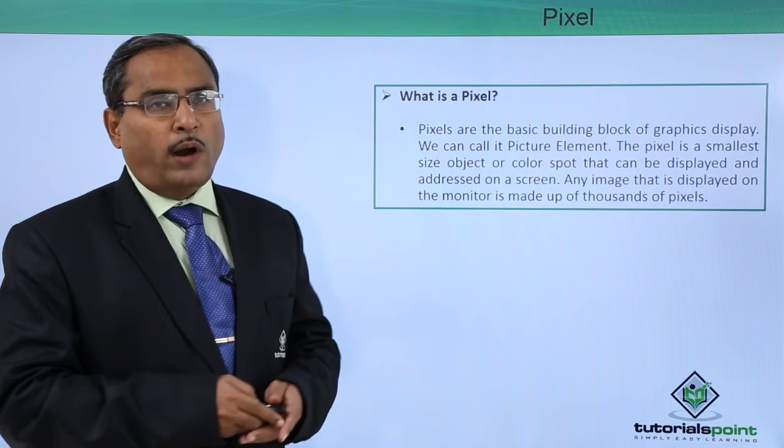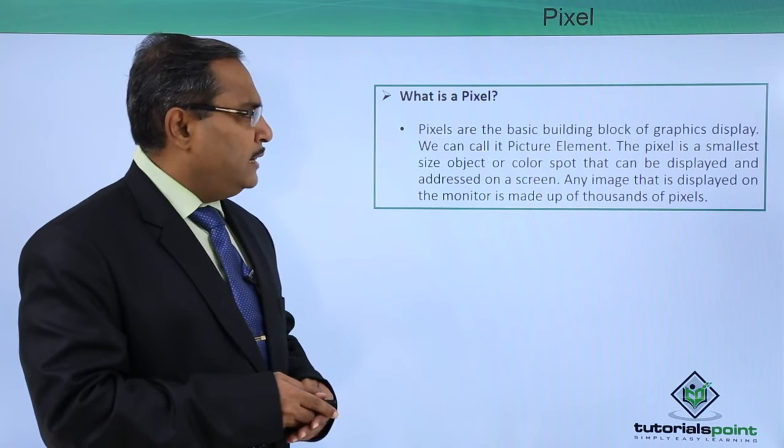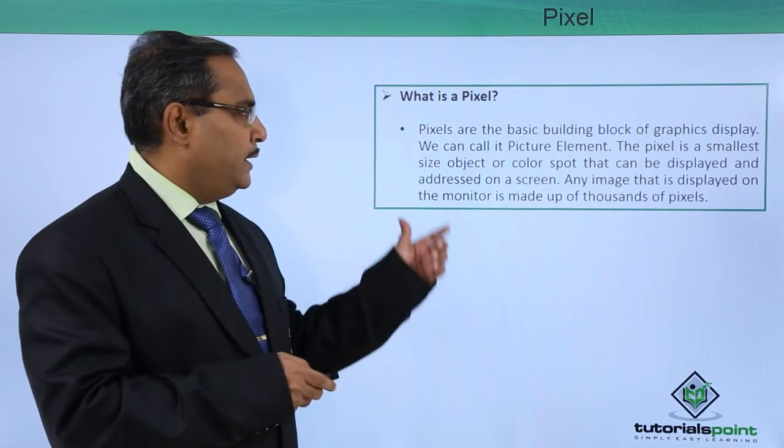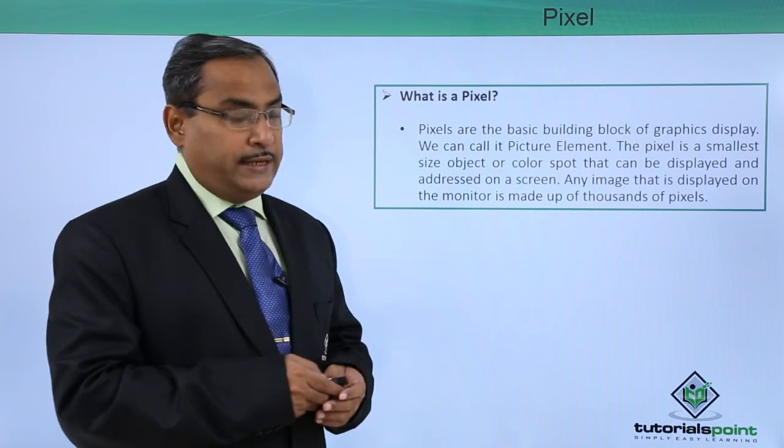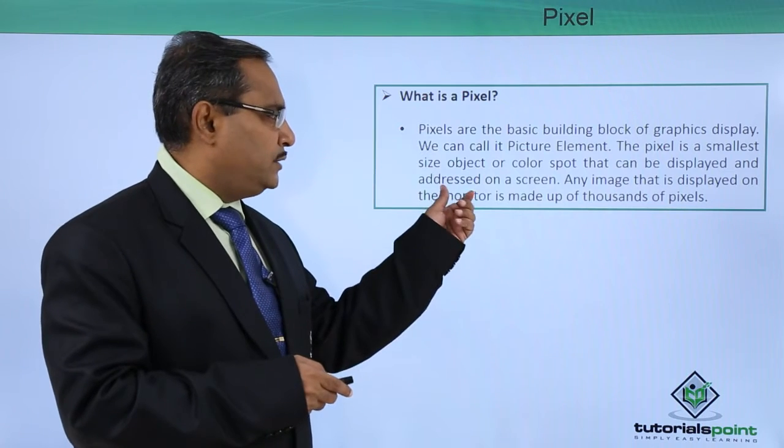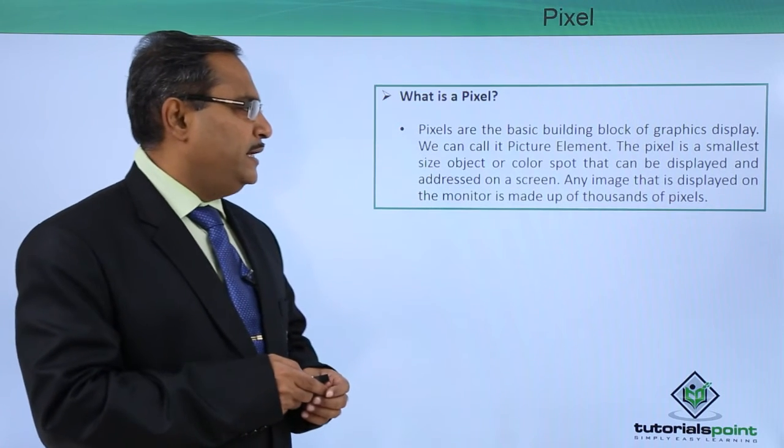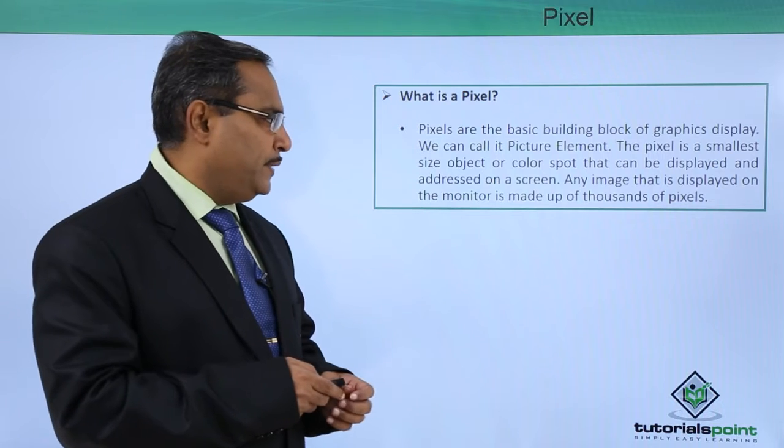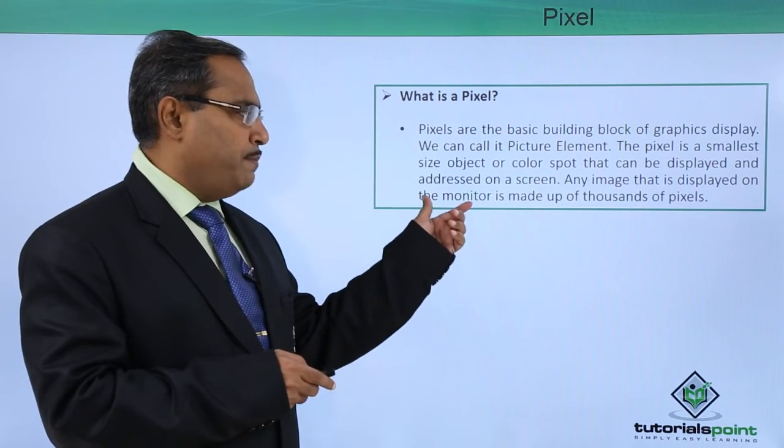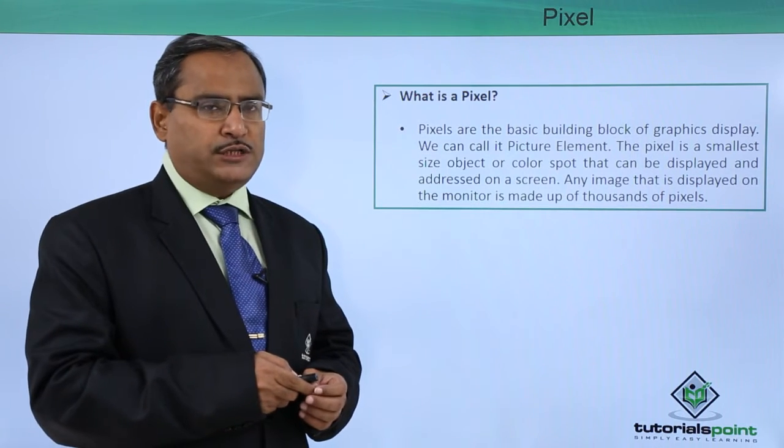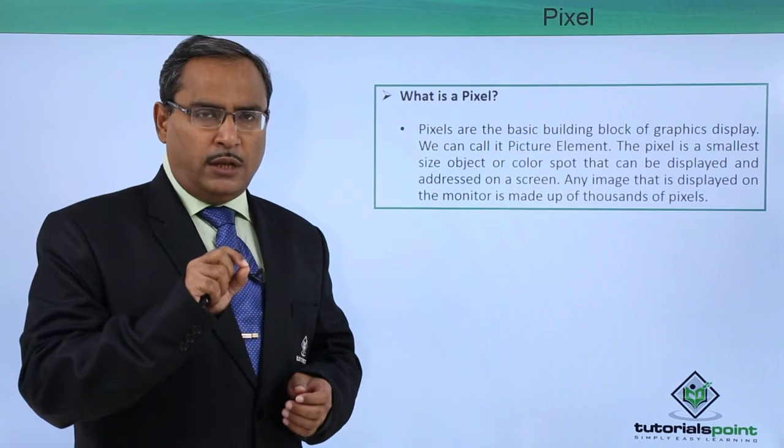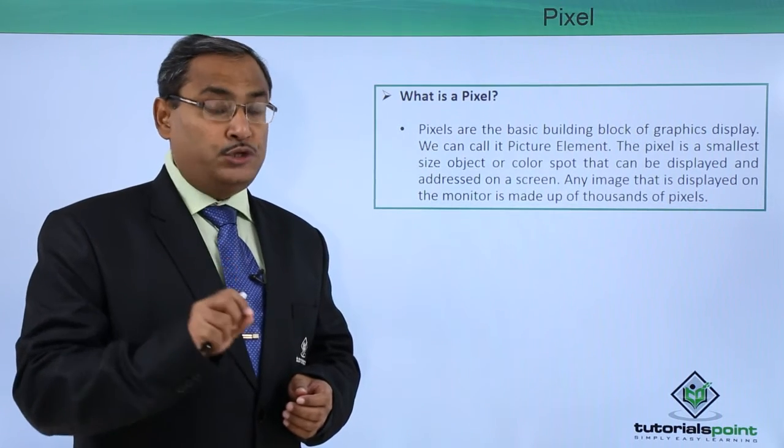First, we are going to discuss what is a pixel. Pixels are the basic building block of a graphic display. We can call it picture element, and the pixel is the smallest sized object or color spot that can be displayed and addressed on a screen. Any image that is displayed on the monitor is made up of thousands of such pixels. So pixel is the minimum area on the screen, on the computer display screen, which you can ignite.